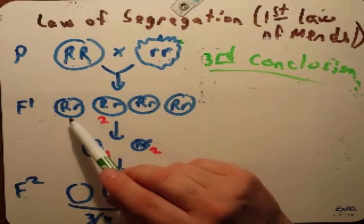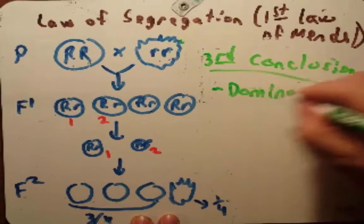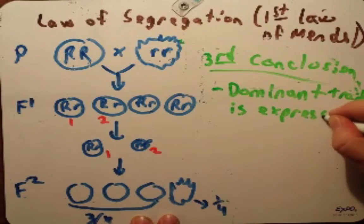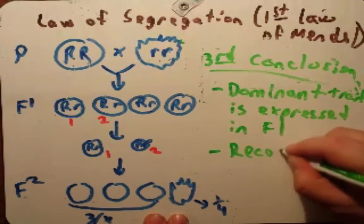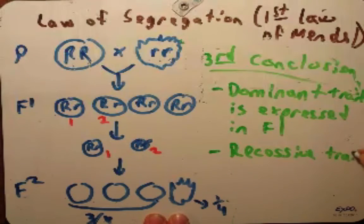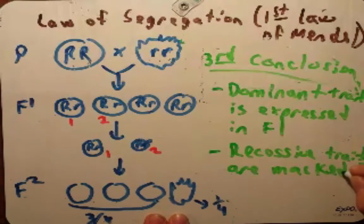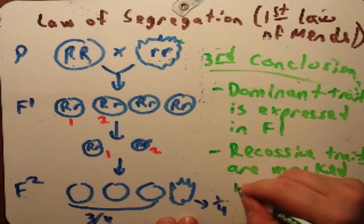This leads to his third conclusion, and this third conclusion centers upon these heterozygotes. This conclusion states that the dominant trait is expressed in F1. That's why we see round instead of wrinkle. And the recessive traits are somehow masked. They are made to appear invisible. We know they're there because they appear again in F2, but here in F1 we don't see them.